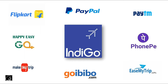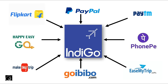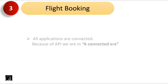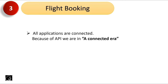From this example, you can understand two things. Number one: because of API, all these applications are connected. Number two: because of API, one application can integrate multiple features — using Paytm you can book a flight, pay a gas bill, pay an electricity bill, recharge, and so much more. So key points here are: all applications are connected because of API, and you can integrate multiple features into your own application.